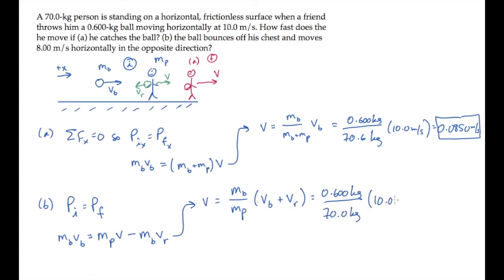you find that in this case, the person moves to the right with a speed of 15.4 centimeters per second, almost twice as fast as they were moving in Part A.